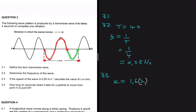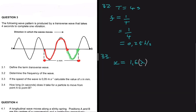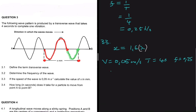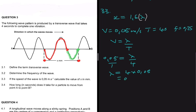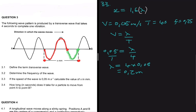To find x, we first calculate the wavelength. The velocity is 0.05 meters per second and the period is four seconds. Using the formula velocity equals wavelength divided by period, we get wavelength equals 4 multiplied by 0.05, which equals 0.2 meters.